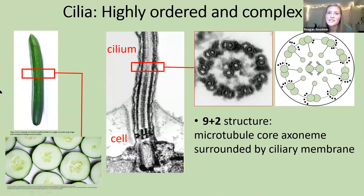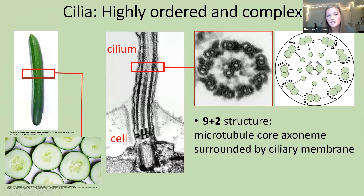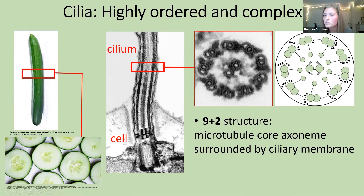This highly conserved organelle is super structured, much like a cucumber. If you were to take a cucumber anywhere along its length and chop it, you would see that same structure — and the same is true about the cilium. In this image, the cilium protrudes from the cell like an antenna. If you chop the cilium anywhere along its length, you see the 9+2 structure: two central pair microtubules and nine outer doublet microtubules, all enclosed in a flagellar membrane.